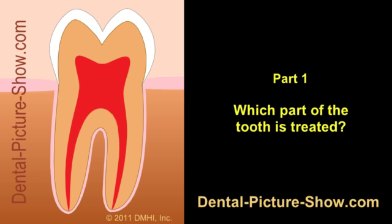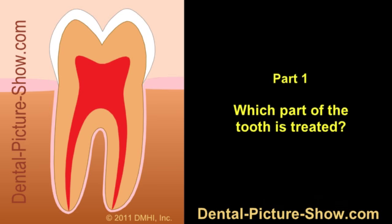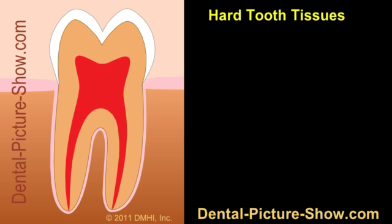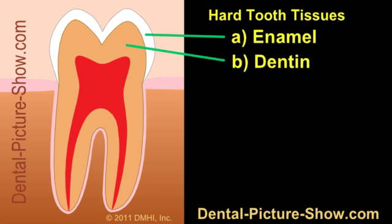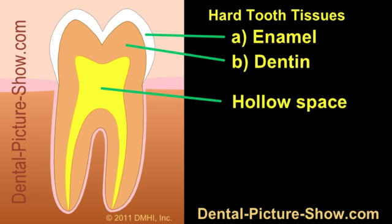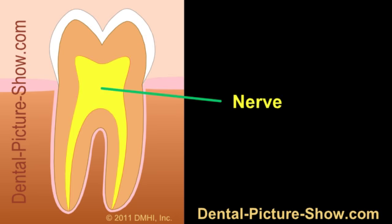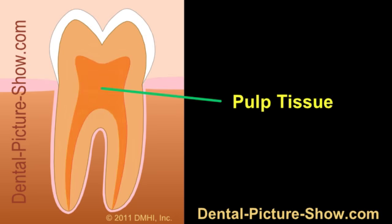Root Canal Therapy involves treating the nerve space inside a tooth. Teeth are hard objects, but they're not solid. Inside each tooth lies a hollow area that houses the tooth's nerve, or, as a dentist would say, pulp tissue.